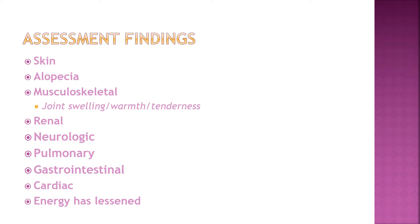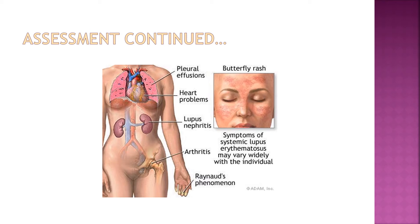Gastrointestinally, patients may complain of nausea, dyspepsia, or intermittent abdominal pain. Cardiac involvement may include pericarditis or myocarditis, which leads to vegetation within the pericardial cavity. Hematologically, they may present with leukopenia, anemia, or thrombocytopenia, as well as alopecia. This covers the multitude of the most chronic issues seen with patients who suffer chronically with lupus.